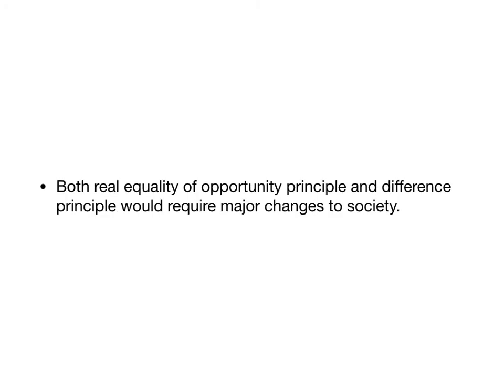Both the real equality of opportunity principle and the difference principle would require major changes to our society. To make sure everybody has real equality of opportunity, think of the dozens of ways our society stands in the way of it: unequal funding for school districts, legacy admissions at colleges, and lots of other things too. Even if we have real equality of opportunity, Rawls would say we still need to make sure any inequalities we have benefit the least well-off person — that the poorest person in society is doing as well as possible.